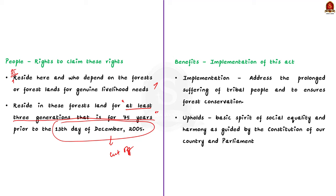During the past few years there were growing cases of tribals being evicted from forest land in parts of the Kashmir valley and Jammu region, as the government termed them illegal encroachers. Despite tribal people having close ties with the forest, there was no legal framework to recognize this. This move is expected to address the prolonged suffering of tribal people and ensure their forest conservation. More importantly, the implementation upholds the basic spirit of social equality and harmony guided by the constitution.